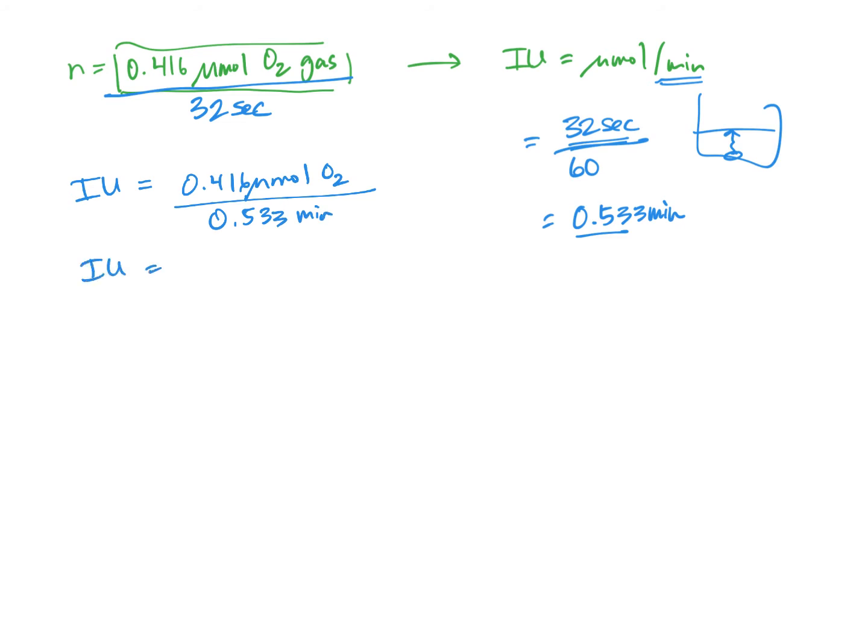32 seconds out of 60 seconds is the same as 0.533 minutes. So 32 seconds, just over half a minute, that makes sense. What we really have now is the international units. We can simplify that down, divide numerator and denominator by 0.533, and we'll end up with 0.780 micromoles of oxygen per minute. There, just the same units as our international units, that's what we've calculated. This is the enzyme activity of the catalase in this little disc.